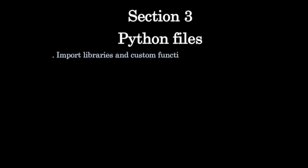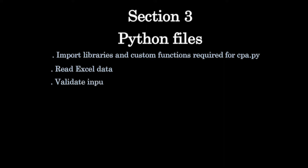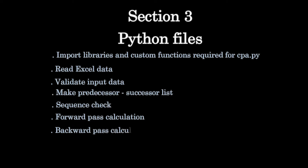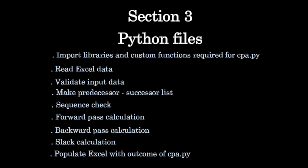Critical path analysis follows nine steps: import libraries and custom functions, read Excel data, validate input data, create predecessor-successor list, sequence check of activities, forward pass, backward pass, float calculation, and populate the worksheet with program results.